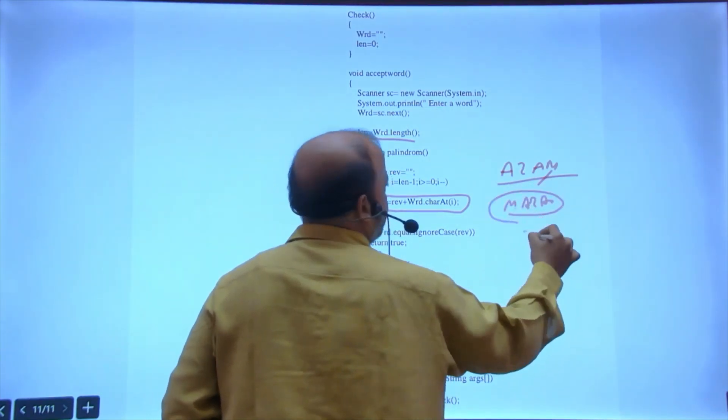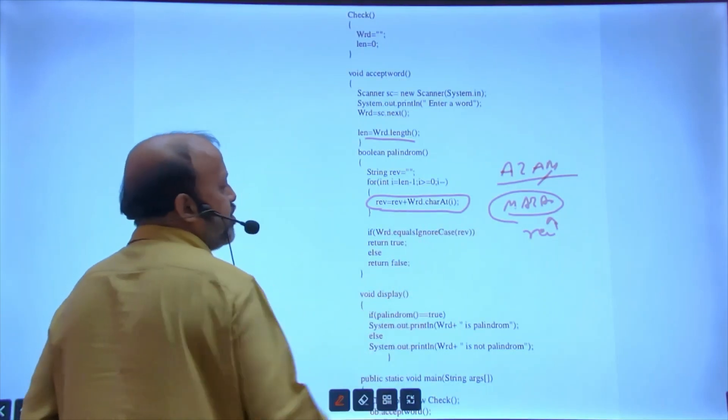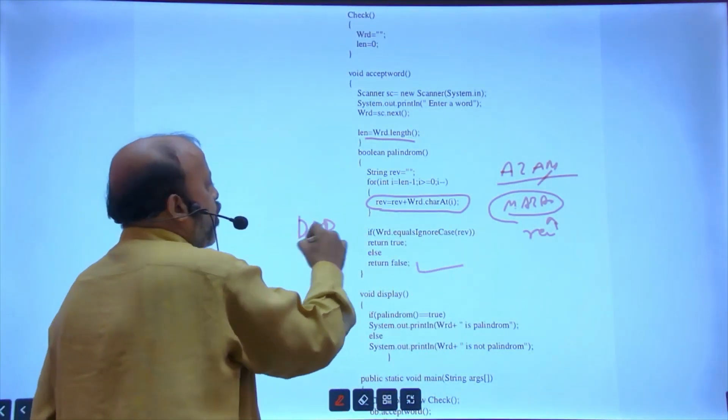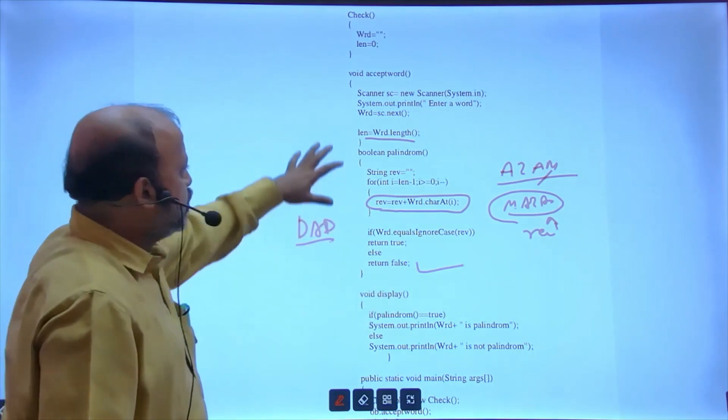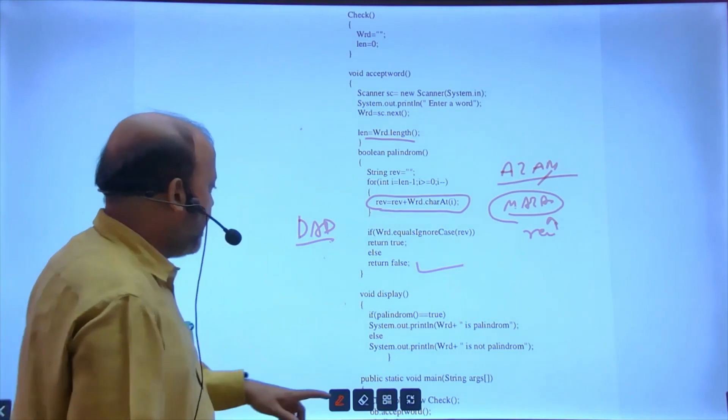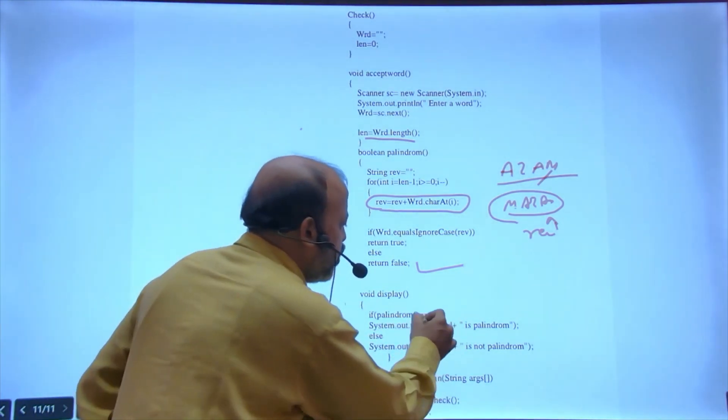Class check, data members, constructors, accept - till here nothing needs to be explained. In void accept, input is happening. In constructor, initialize boolean palindrome, take one reverse string blank.